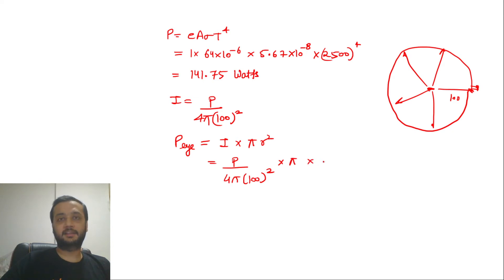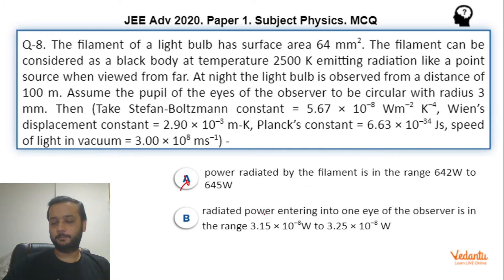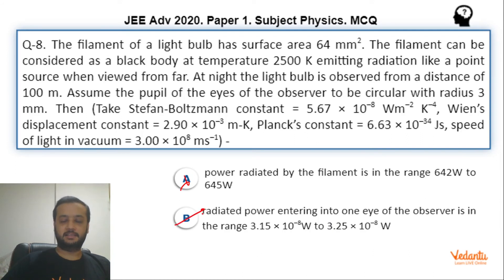So that means π × (3 × 10⁻³)² correct. Now multiply and calculate. The value is 3.19 × 10⁻⁸ watt. This value if you go back to option B, it falls in our range 3.19, so option B is the correct answer.